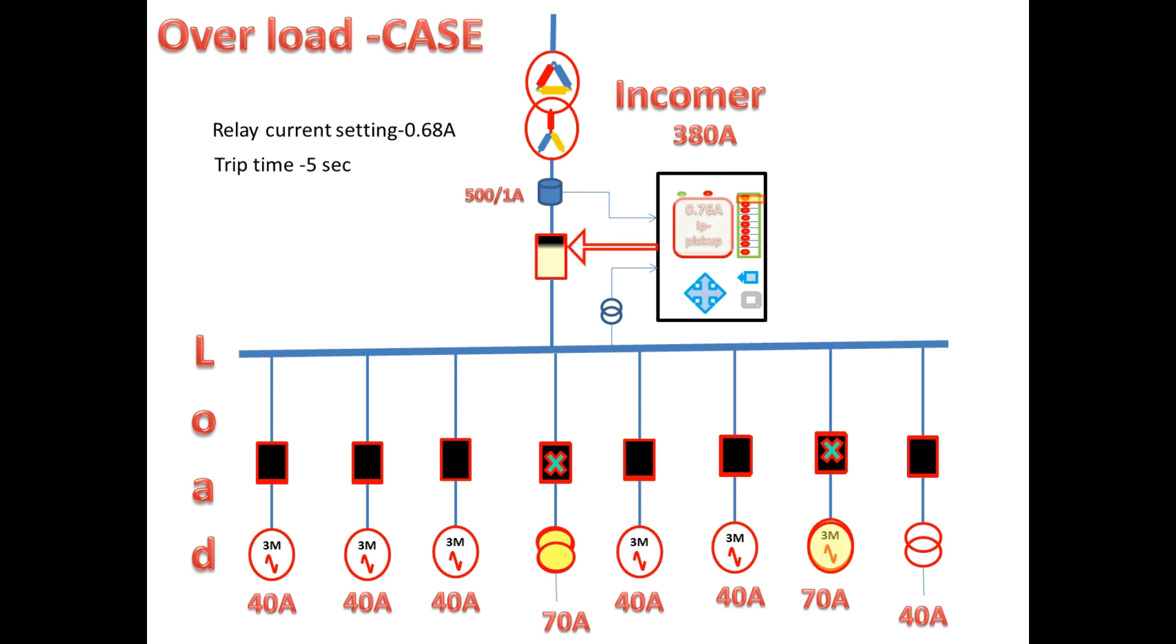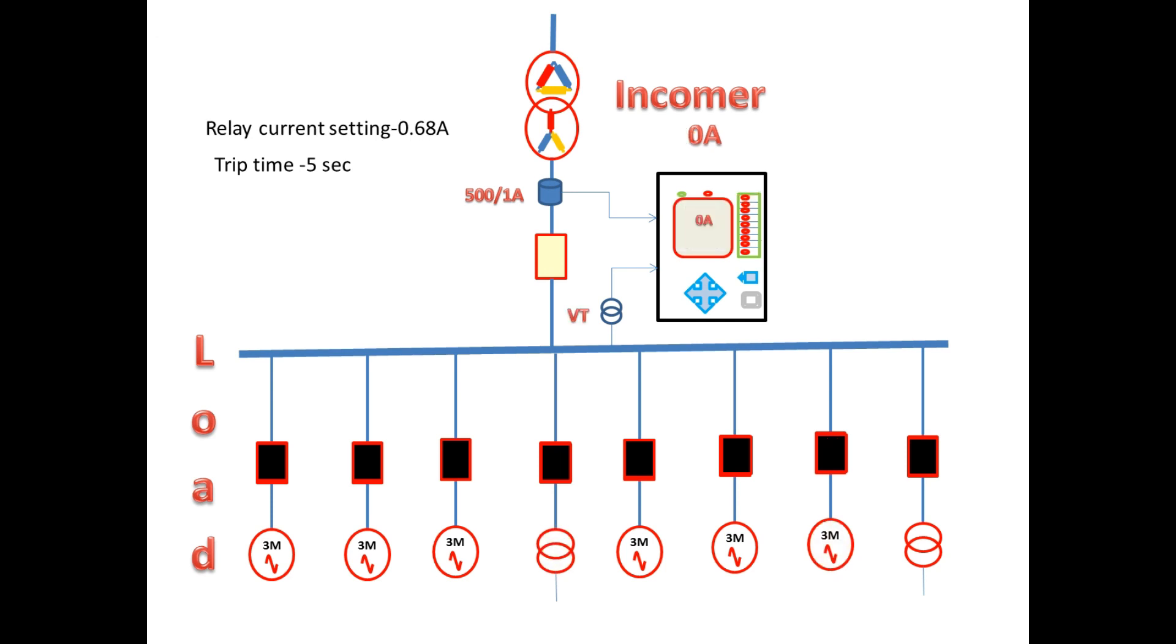But the tripping time for the incomer is very less. Due to that, the incomer feeder trips first. So the incomer trips due to these two feeders overload. This leads to power failure to all outgoing.